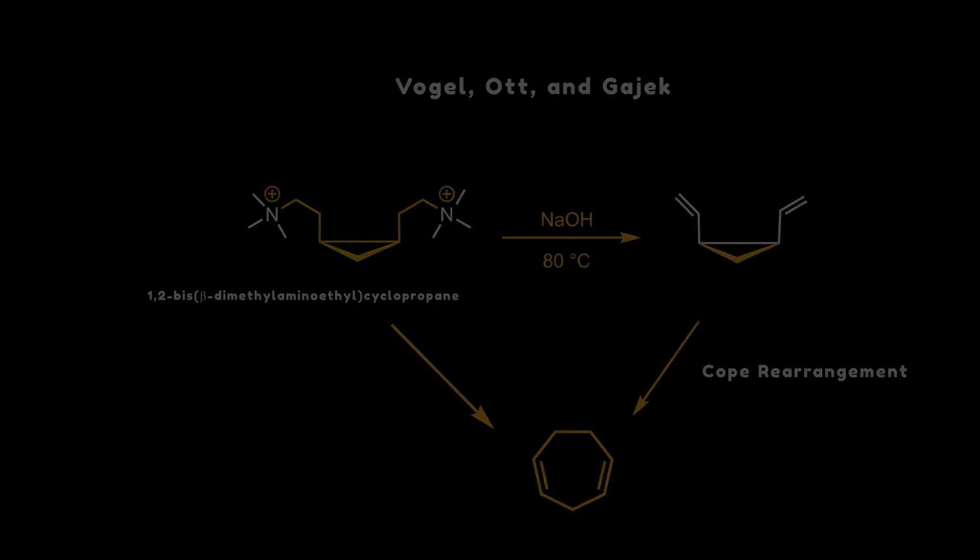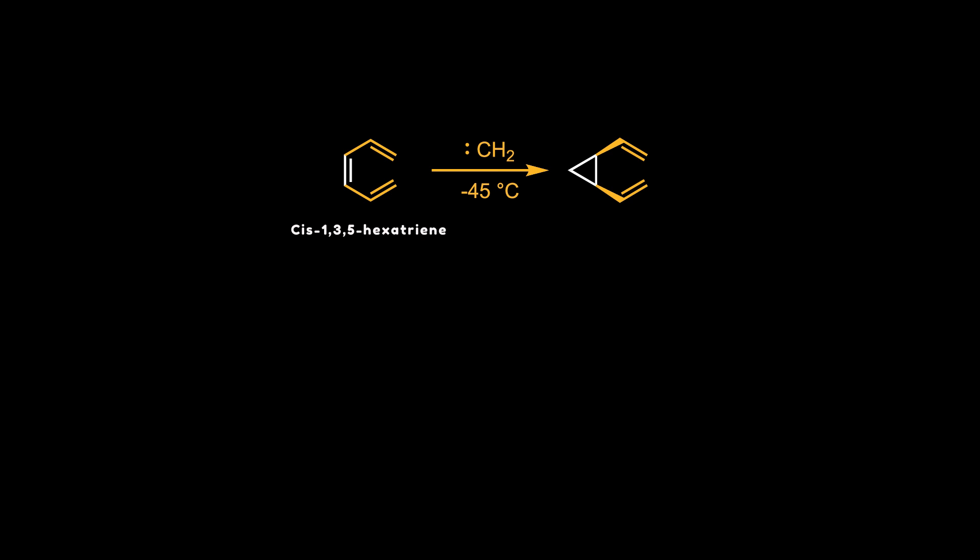Doering and Roth then attempted to prepare the cis isomer by cyclopropanation of cis-1,3,5-hexatriene. Although several cyclopropene derivatives were formed, no cis isomer could be detected in the product mixture.